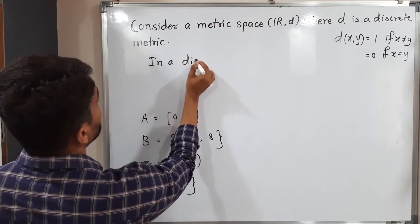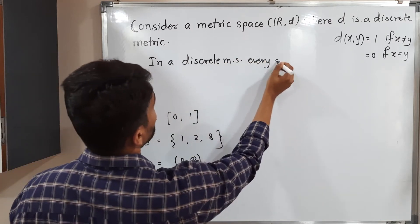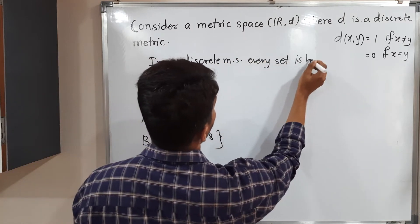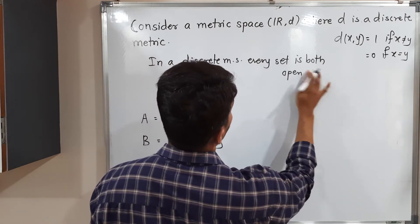We know that in a discrete metric space, every set is both open and closed.